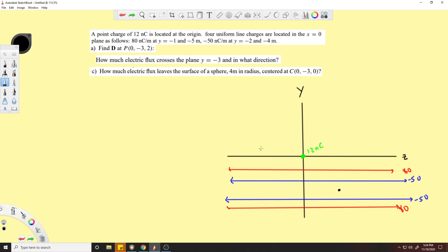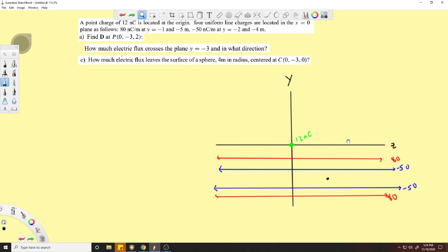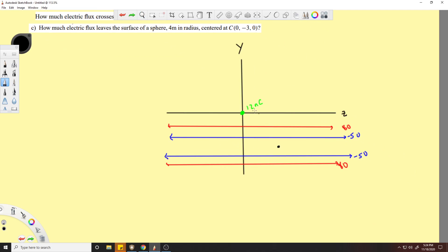So I have taken the liberty to draw out our situation. You got your 12 nanocoulomb charge here, you got four line charges and one point charge, and we want to know what the electric flux density is at this point.